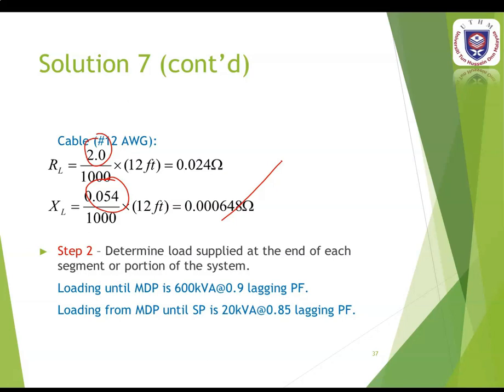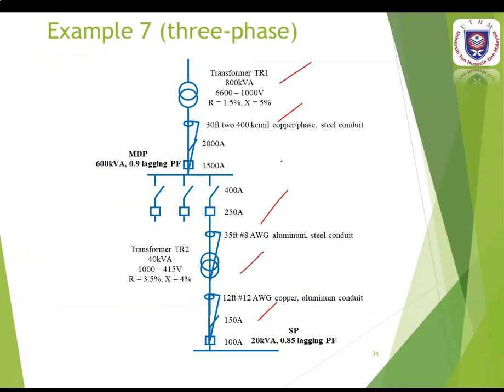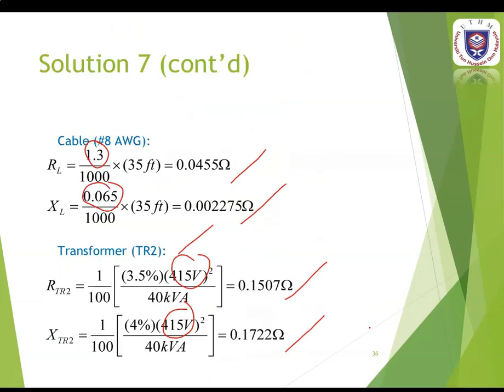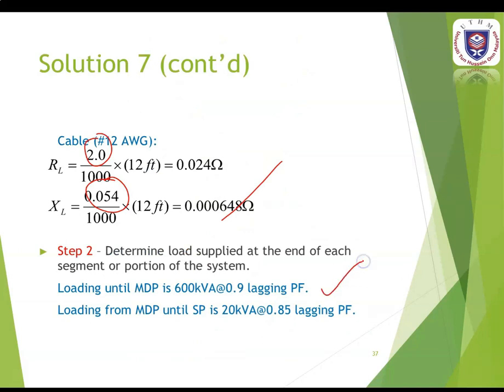After identifying all system impedances, the next step is to determine the load supply at the end of each segment. At the end of the main distribution panel is load 1 at 600 kVA with 0.9 lagging power factor. At the end of the service panel is load 2 at 20 kVA with 0.85 lagging power factor.